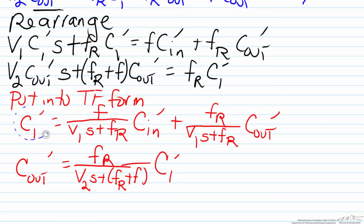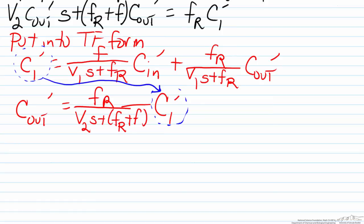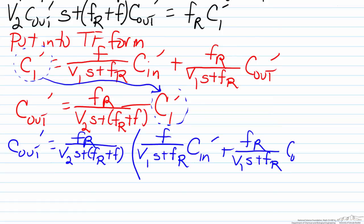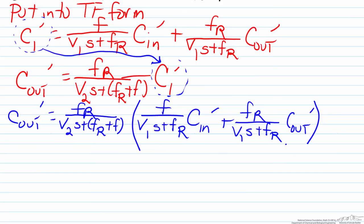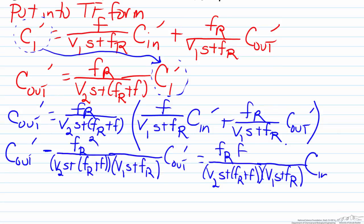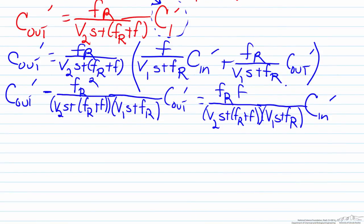Notice that our top equation for the upper portion is explicit for C_1', and all I need from C_out' is that exact term, so we're going to substitute in. This is going to get a little messy algebraically. In order to get our final transfer function C_out' over C_in', we have to gather the C_out' terms together. If we factor out the C_out' part and move the C_in' over, we actually have our transfer function.